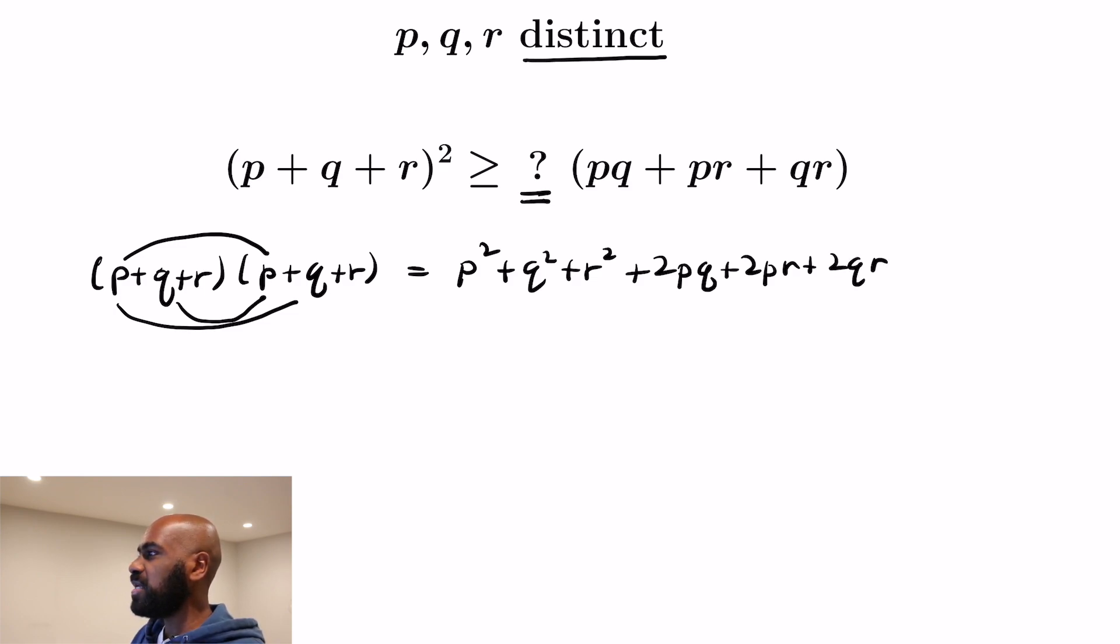Now P², Q², and R² are all non-negative. So this gives us that the left hand side is greater than or equal to 2(PQ+PR+QR). So we definitely know that we can make the question mark greater than or equal to 2.